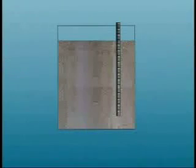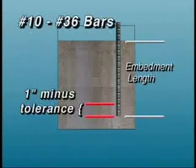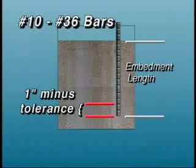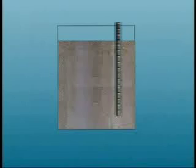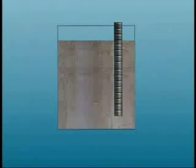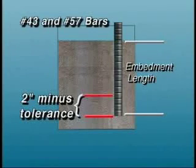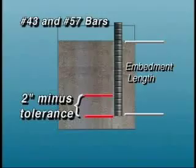The embedded length of bars and length of bar laps for number 10 through number 36 bar sizes is minus 1 inch with no plus tolerance, because an increased length is not detrimental. The embedment length for number 43 and number 57 bar sizes is increased to minus 2 inches.